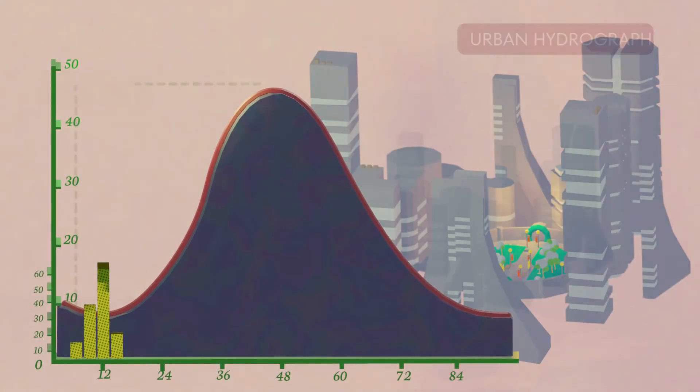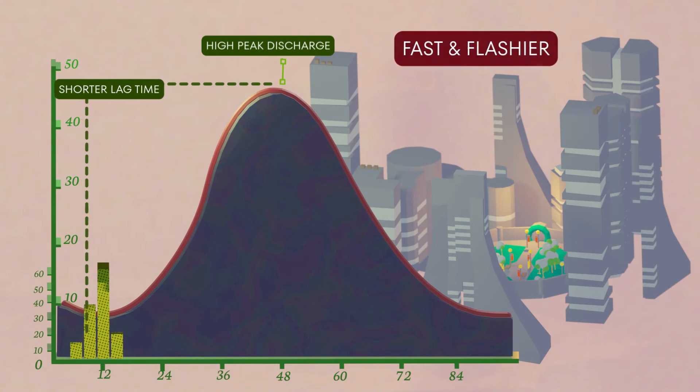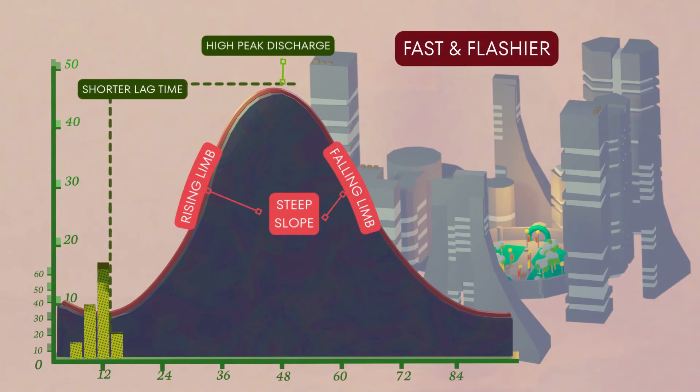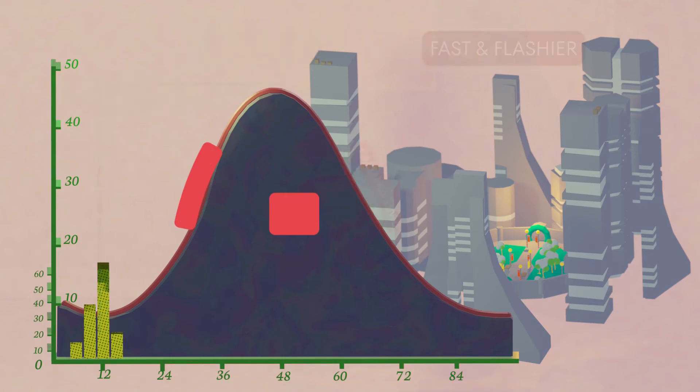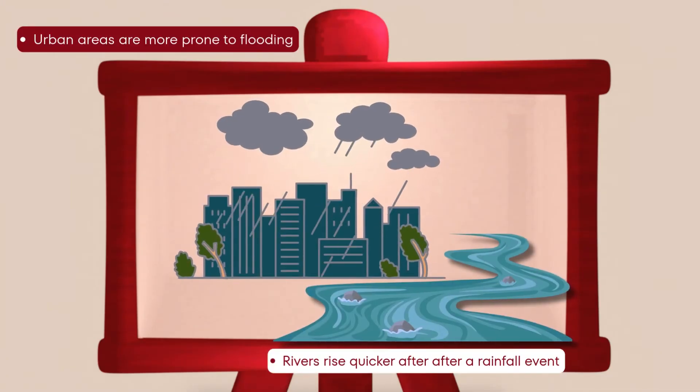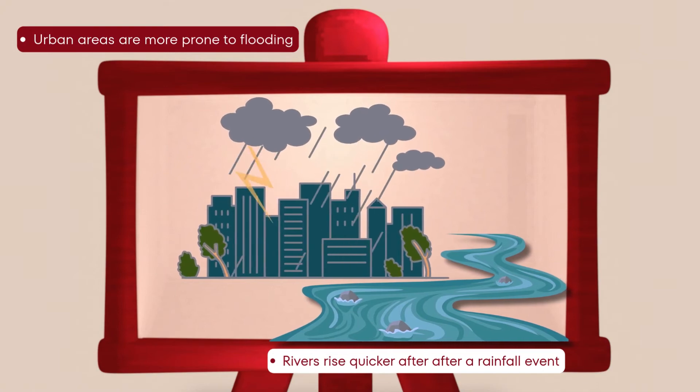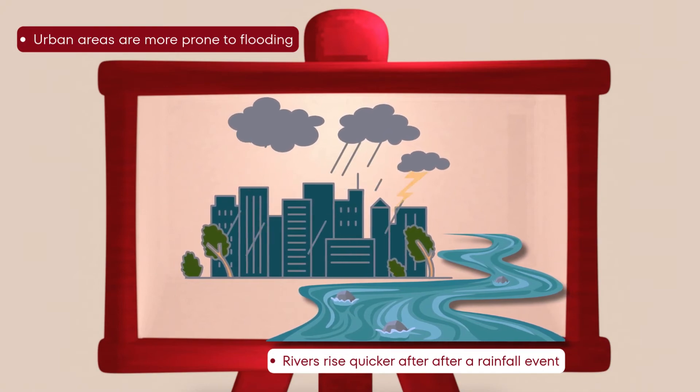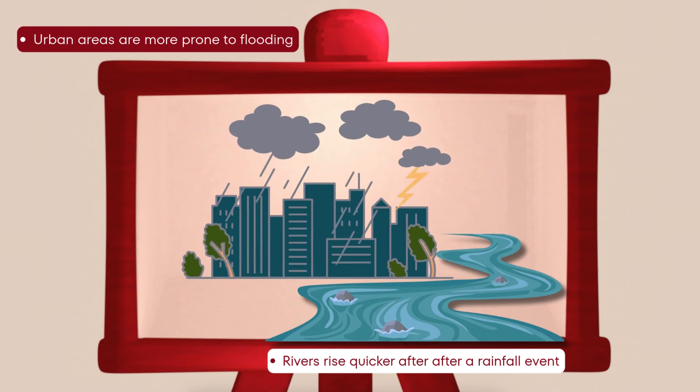This creates a flashy hydrograph with a short lag time, peak discharge is very high, and a steep rising and falling limb. Urban areas, as a result, are at higher risk of flooding because rivers rise quicker after the rain has fallen.